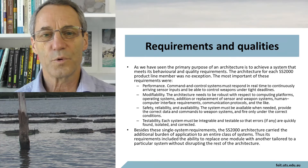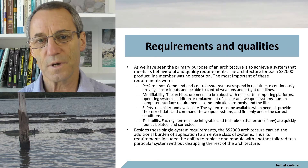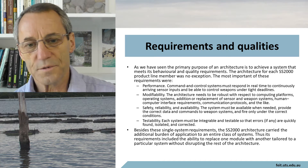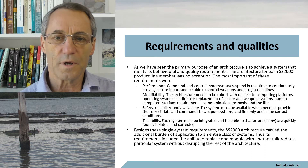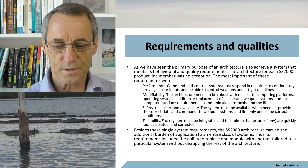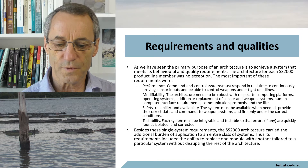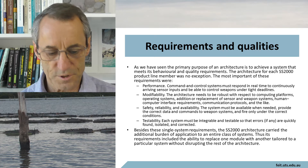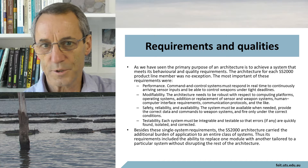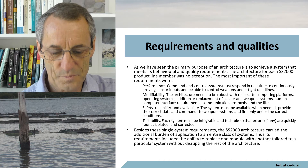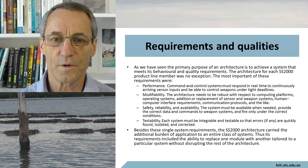Let's have a look at the product line architecture of the Ship System 2000. We start with the requirements and the qualities. The primary purpose of the architecture is to achieve a system that meets its behavioral and quality requirements. The architecture of a Ship System 2000 product line member was no exception. The most important of these requirements were performance — command and control systems must respond within real-time constraints — and modifiability, as it had to be modifiable to meet the requests and requirements of different clients.